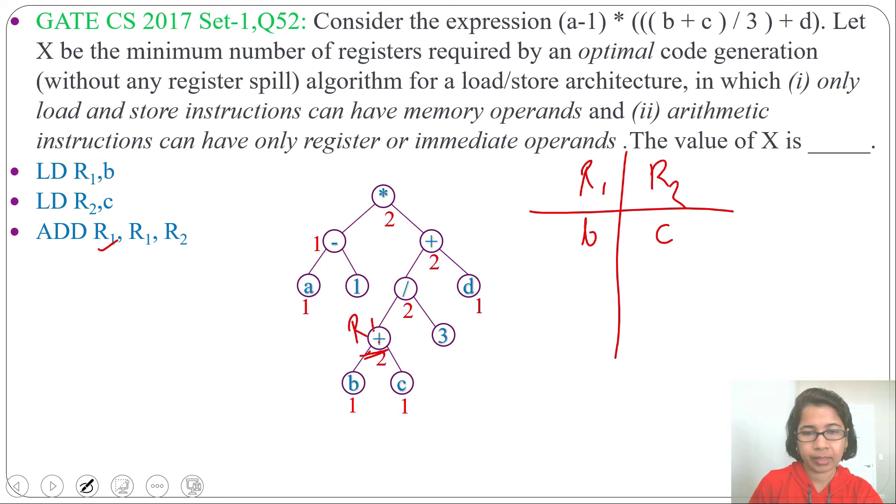Next, we need to divide by 3. So just write down division R1 R1 #3. And number we can write by the hash symbol. So now this division is in register R1. Now we need to do this addition. For this addition, this D should be in register and we don't have any free. So what we can do? We can load D into register R2. So load R2 D. Now R2 contain D. Next, we can add R1 with R2. So add R1 R1 R2. Now this result is in R1.